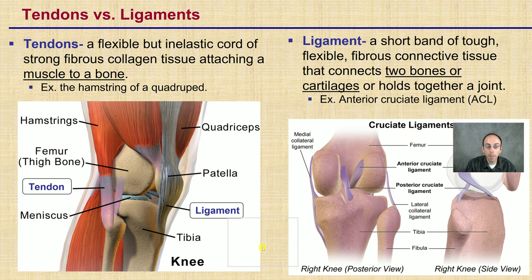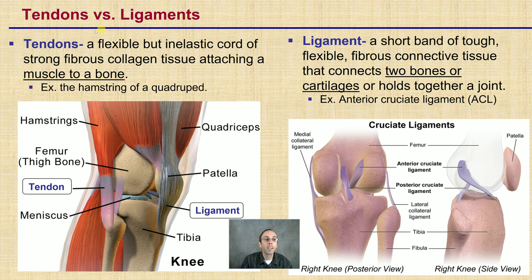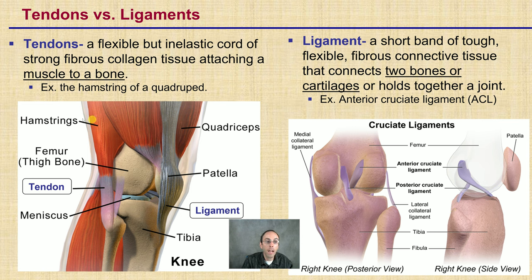If you've heard of tendons and ligaments used as interchangeable terms, that's a misnomer. Technically, a tendon is a flexible and elastic cord of strong fibrous collagen fiber attaching muscle directly to bone — so tendon is muscle to bone. In contrast, a ligament is a short, flexible fibrous connective tissue that connects two bones or two cartilages together and holds a joint together. The ACL, for example — that L refers to ligament, linking two bones together, whereas a tendon attaches the muscle, in this case the hamstring, to the bone.